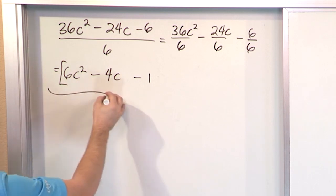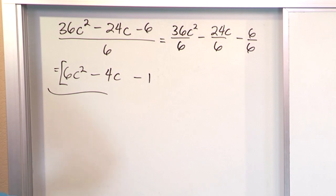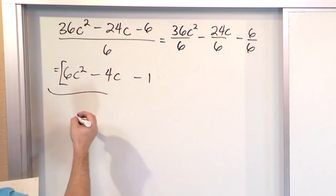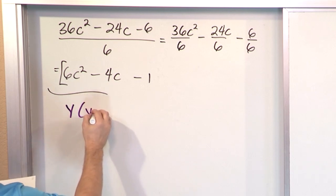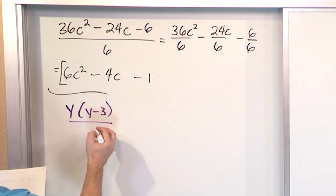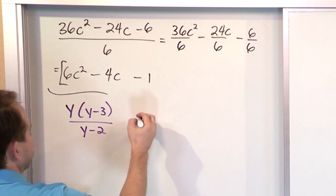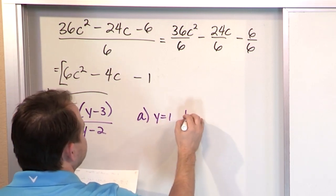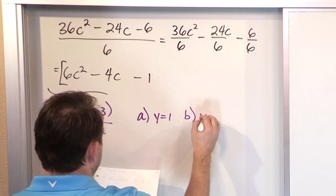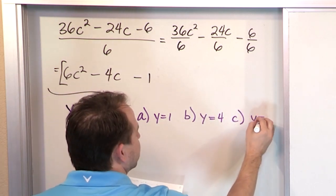The next thing we want to do is evaluate the following expression: y times (y minus 3) divided by (y minus 2). We want to do it three ways. Part A: y is equal to 1. Part B: y is equal to 4. Part C: y is equal to 3.